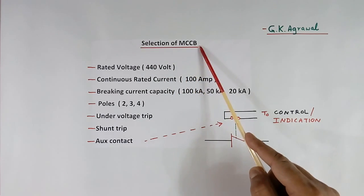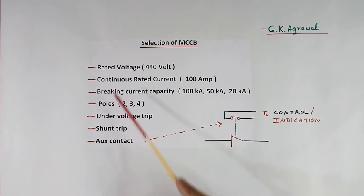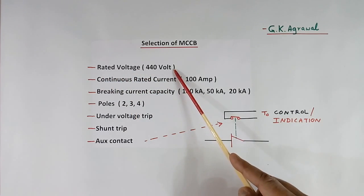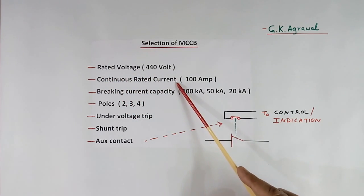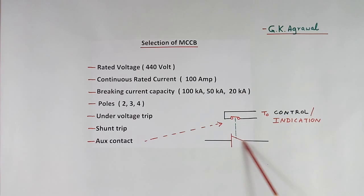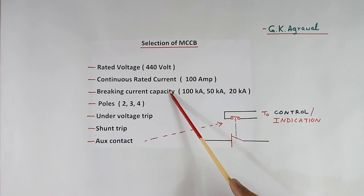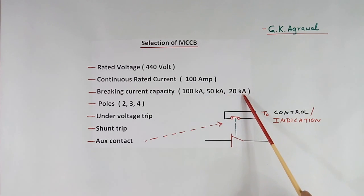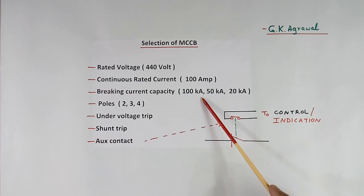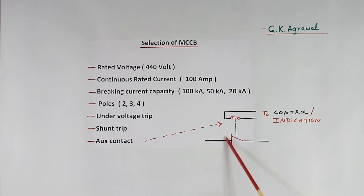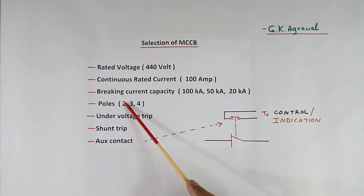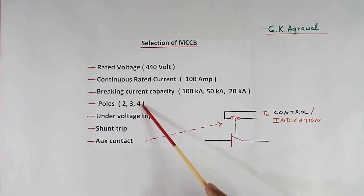When we want to select an MCCB, we should know: the rated voltage, say 440 volt; the continuous rated current, say 100 ampere — this rated current means whatever maximum continuous current will flow in this contact; the breaking current capacity, which may be 20 kA, 50 kA, or 100 kA; and how many poles are required. If it is single phase with line and neutral, there will be 2 poles. If it is 3 phase, there will be 3 poles. If 3 phase including neutral, there will be 4 poles.